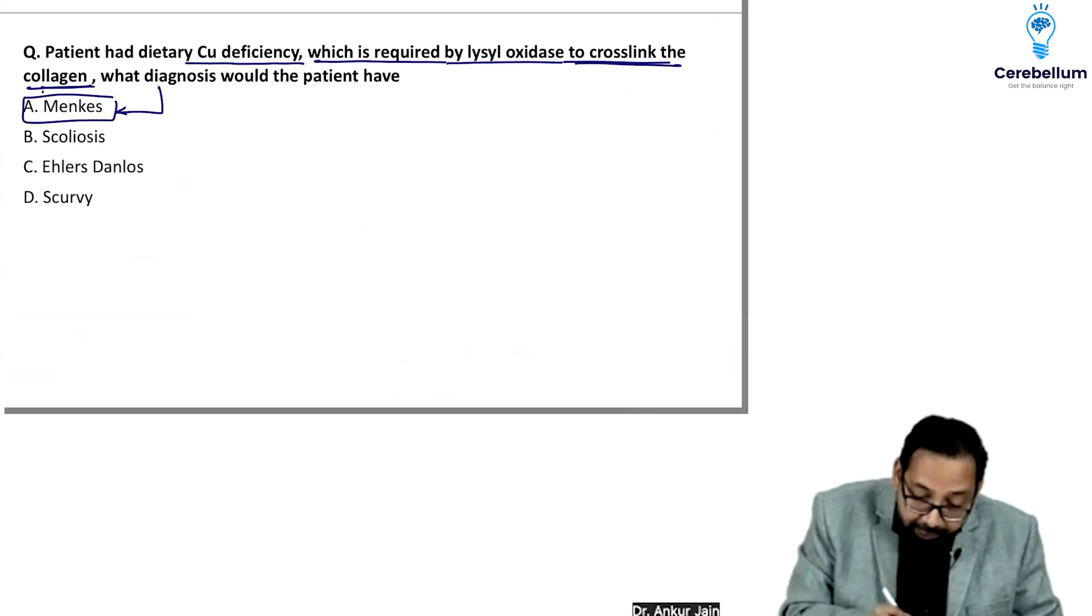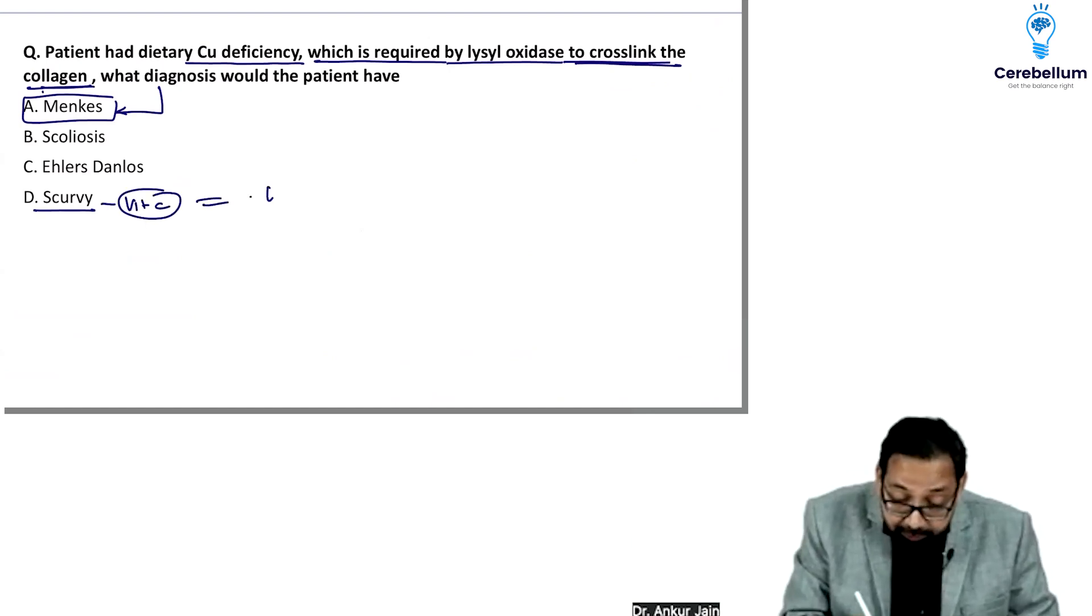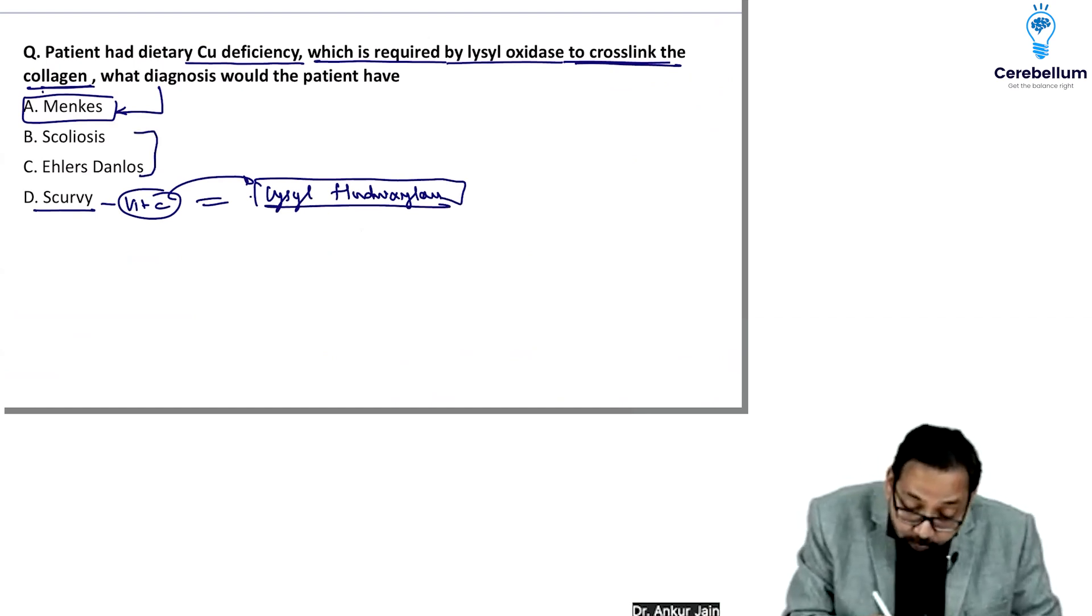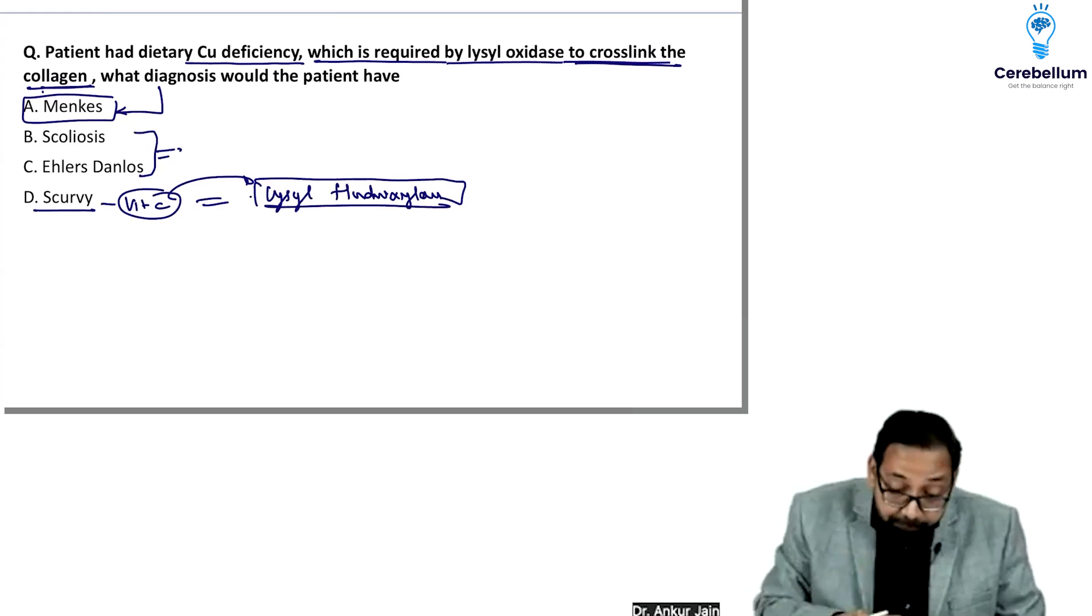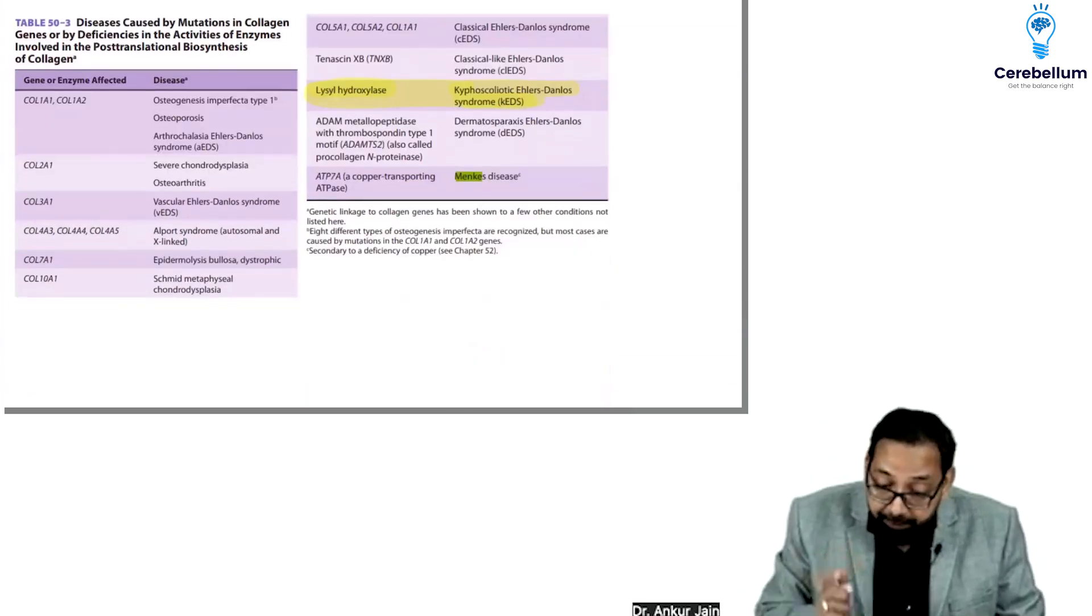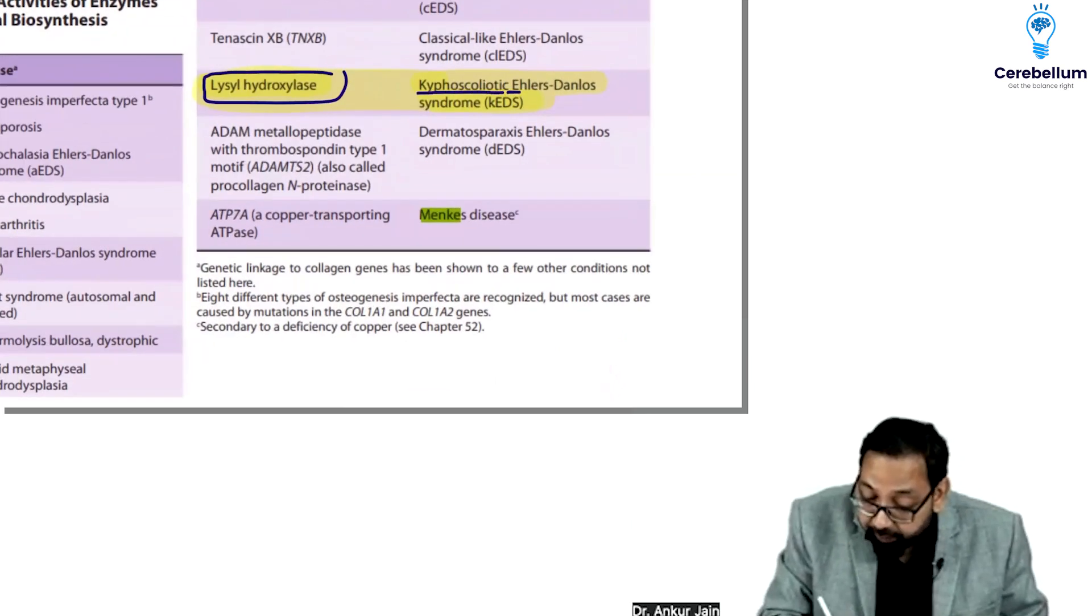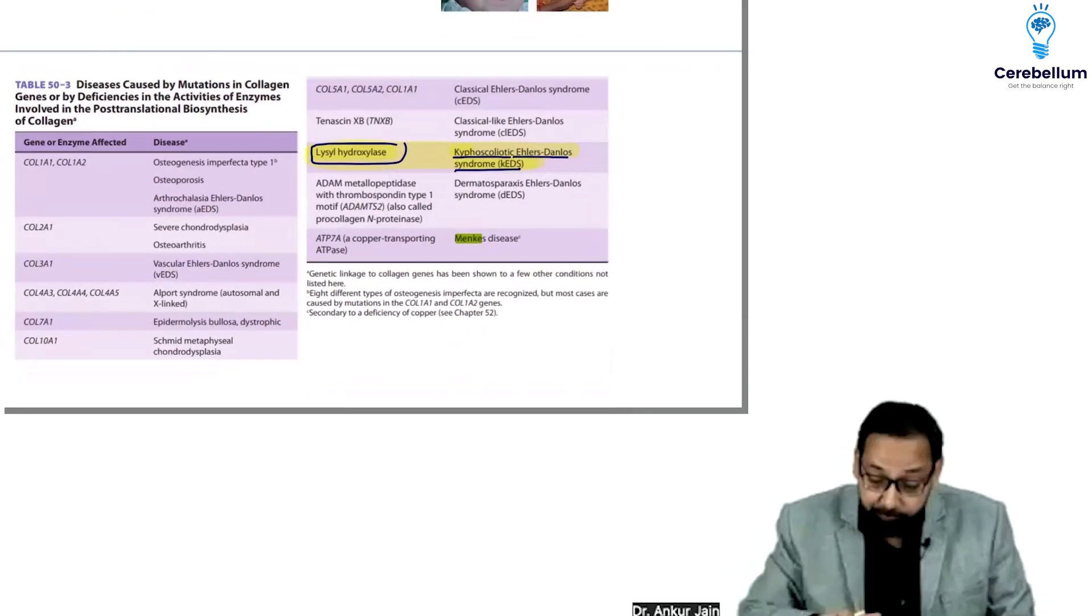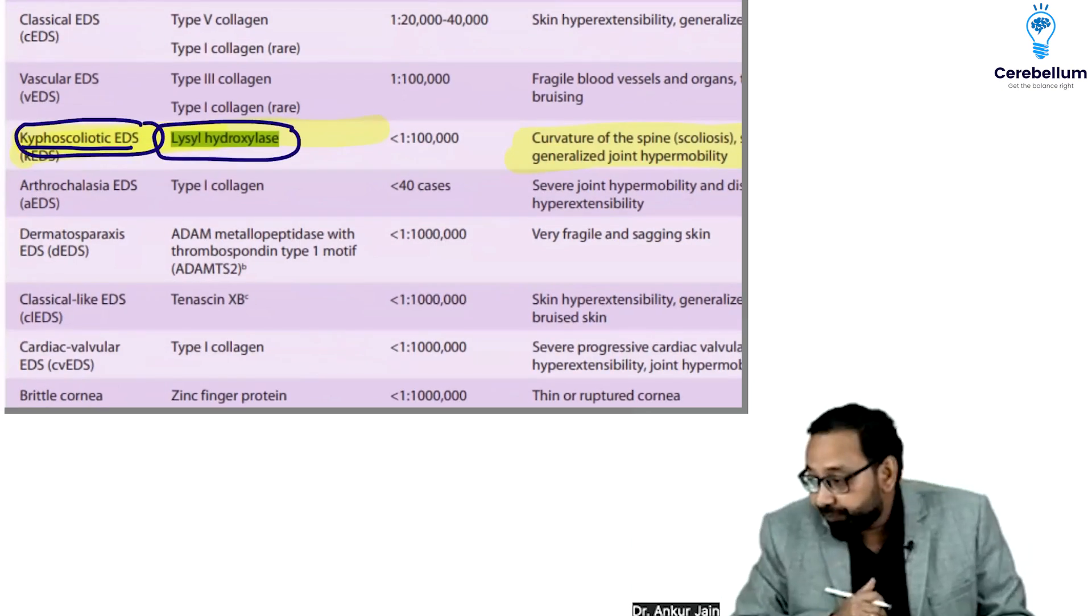They deliberately gave scurvy as an option. Vitamin C deficiency is responsible for lysyl hydroxylase. Vitamin C is required for lysyl hydroxylase. Lysyl hydroxylase is deficient in kyphoscoliotic Ehlers-Danlos syndrome. They try to confuse you if you've read in depth. Kyphoscoliotic Ehlers-Danlos syndrome has lysyl hydroxylase deficiency.